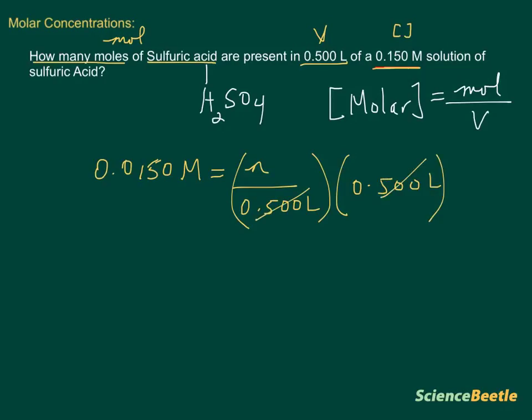That causes the volume to cancel, leaving N by itself. When we do that to one side, we do the same to the other. So we put 0.500 liters on the right-hand side, which gives us the answer.